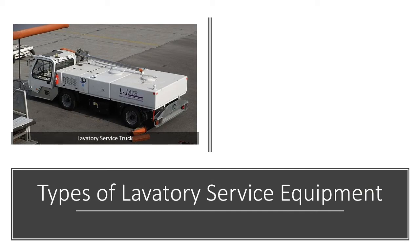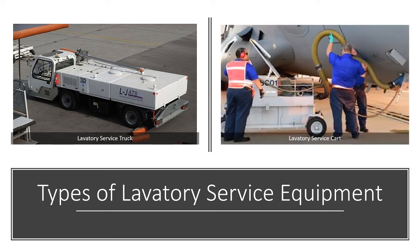There are two main types of lavatory service equipment. The first type is a lavatory service truck, which is the most common type where all equipment components are installed over a truck. The other type is a lavatory service cart, in which all components are installed over a cart that needs to be towed to the desired location by a towing tractor. Almost all large airports use lavatory service trucks because they can service more aircrafts than a lavatory service cart and they don't require any external machine such as a towing tractor for moving them.